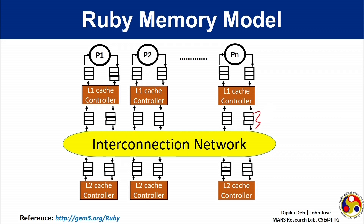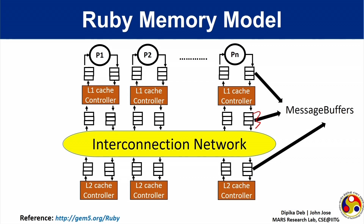The memory components communicate with each other by generating packets such as request and reply. For example, the processor generates a request to the L1 cache. From the L1 cache, if it is a hit, it replies back to the core.